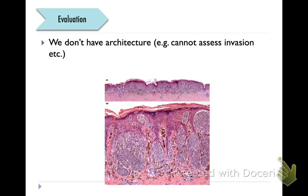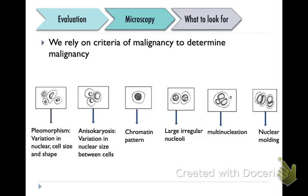We don't have architecture on cytology — here's a picture of a histologic section — and so we can't assess invasion. What we look at when we're evaluating cytology is we're reliant on criteria of malignancy. The criteria of malignancy include pleomorphism in terms of nuclear cell size and shape variations, anisokaryosis which is variation in the nuclear size, differences in chromatin patterns, irregular nucleoli, multinucleation, and nuclear molding are all features that we look at for criteria of malignancy.